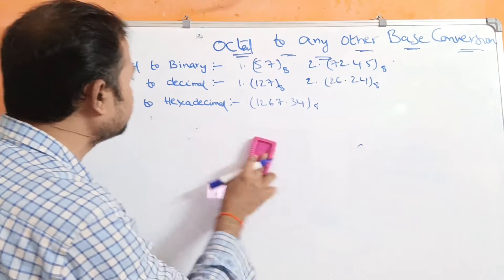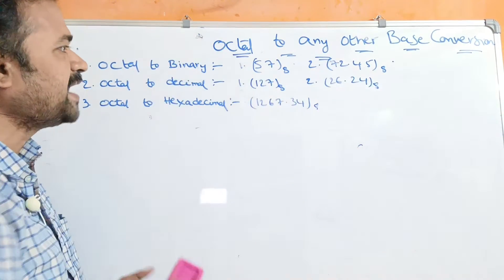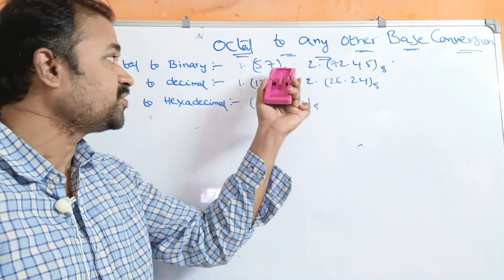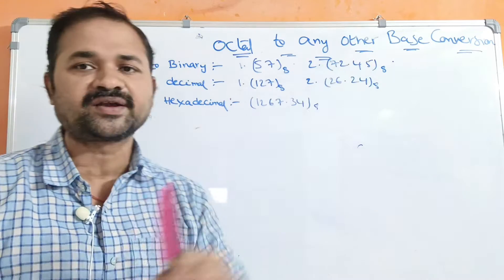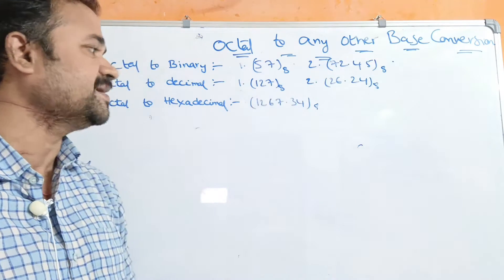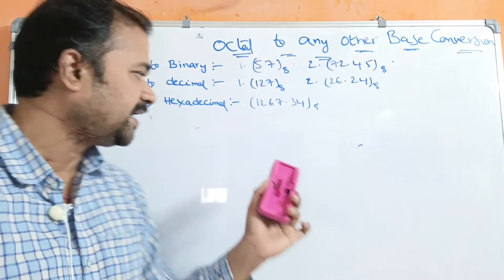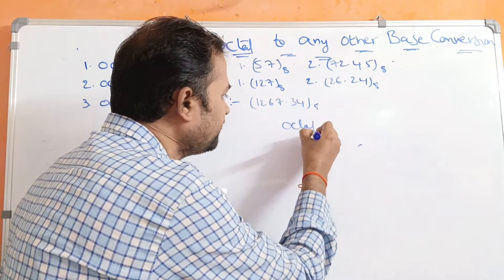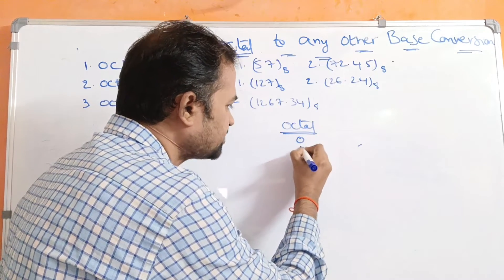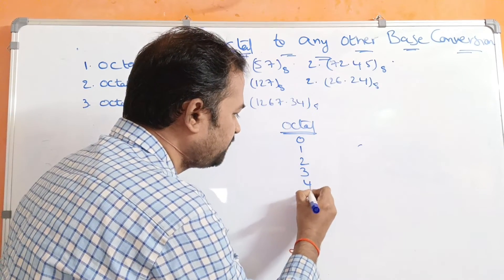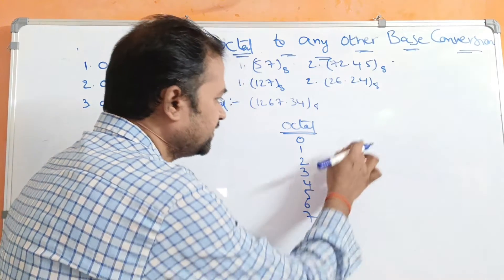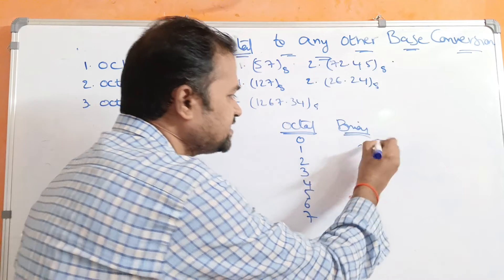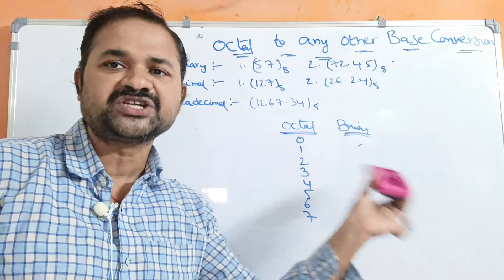Now let us see the first one: octal to binary conversion. Two octal numbers are given and we have to convert them into binary numbers. Each octal digit represents 3 bits — this is the binary notation for the octal number. Octal mainly has 8 symbols from 0 to 7.